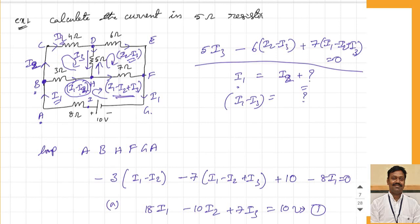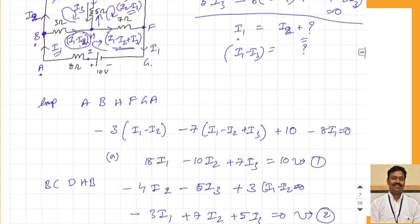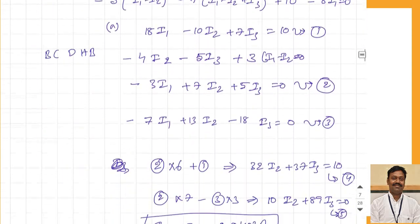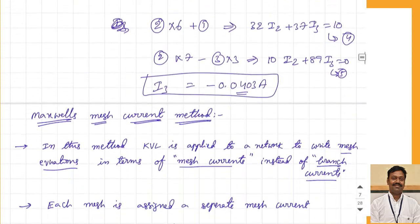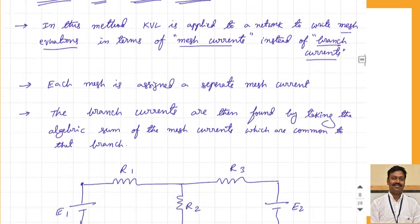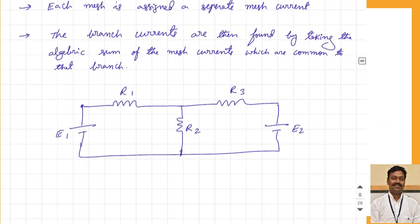So the currents in different branches are very confusing, and while writing the equations it creates a lot of confusion. That is a major disadvantage, and sometimes the number of current variables will be more. So automatically you have to solve more equations. In order to avoid all these confusions, we don't take the branch current — we only take the current passing through a particular mesh.